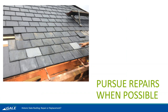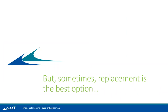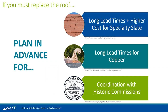This is all a reminder: we want to try to pursue repairs whenever we can, but sometimes replacement is the best option. If you must replace your roof, a couple of things to think about: first, long lead times and higher costs for specialty slate. Depending on the size and color you're looking for, it could take up to a year, if not more, to get all the stock you might need. So that project might not be able to happen next year — it might have to happen the year after that.